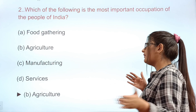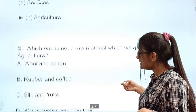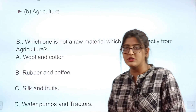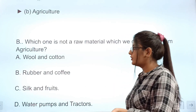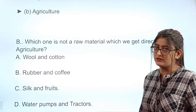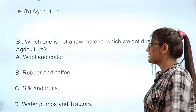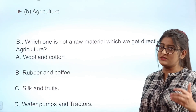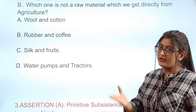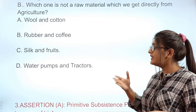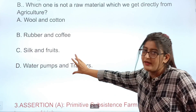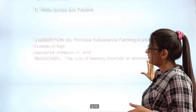Question 3: Which one is not a raw material we get directly from agriculture? Options: A wool and cotton, B rubber and coffee, C silk and fruits, D water pumps and tractors. The correct answer is D — water pumps and tractors. Wool, cotton, rubber, coffee, silk, and fruits are all obtained directly from agriculture, but water pumps and tractors are manufactured goods, not raw materials from agriculture.